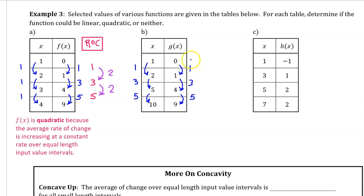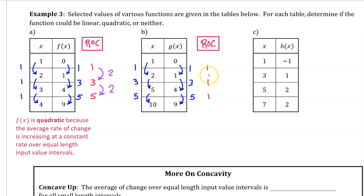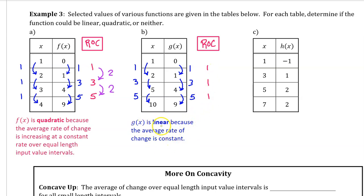For part b, here are the changes in output and here are the changes in input. Dividing the output change by the input change gives us 1 every time, so the rate of change is constant. g of x is linear because the average rate of change is constant. Notice that for linear, you don't need equal length input value intervals.